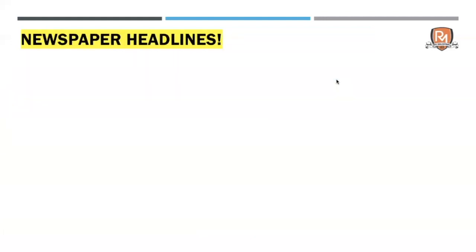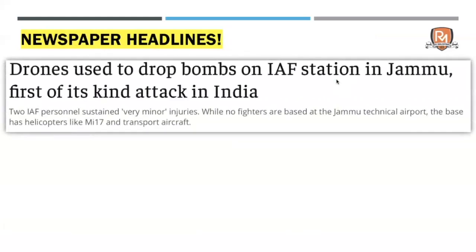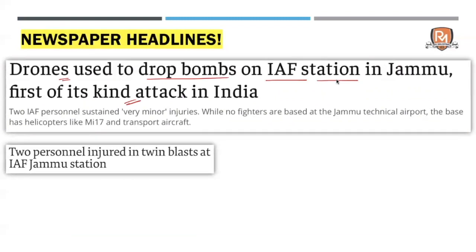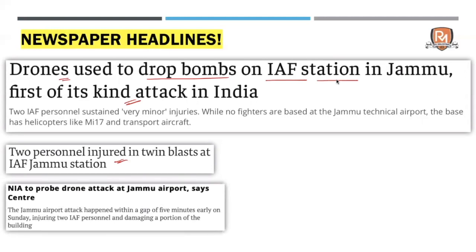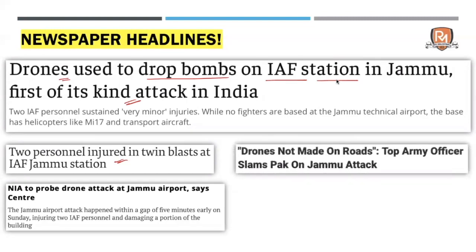The recent attack that happened in Jammu — looking at the newspaper headlines — drones were used to drop bombs on the IAF Air Force Station base in Jammu. Since drones were used, it is the first of its kind attack that has happened in India. This particular incident did not damage any equipment and, thankfully, nobody lost their life, but two personnel were injured in the twin blasts. Immediately after, the Jammu and Kashmir police and other departments rushed in to investigate, and the government decided that the investigation should be carried out by the NIA — the National Investigation Agency. After this attack, the top army officer also said that drones are not something that can be made on roads, which definitely points to the role of a state that might be backing this attack.